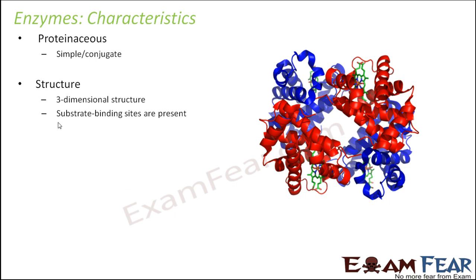Enzymes have substrate binding sites, which are the active sites. As discussed when talking about the tertiary structure of proteins, there is something called active sites. Enzymes always act on the reactants in a chemical reaction, that is the substrate. The substrate has to bind with the enzyme because they work together, and in the enzyme there is a site where the substrates can bind themselves. Those regions are known as active sites or substrate binding sites.